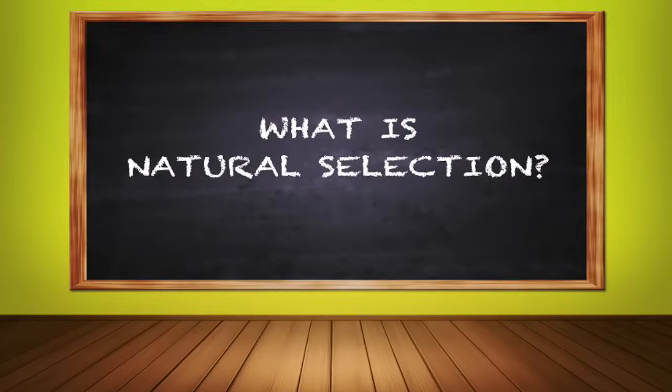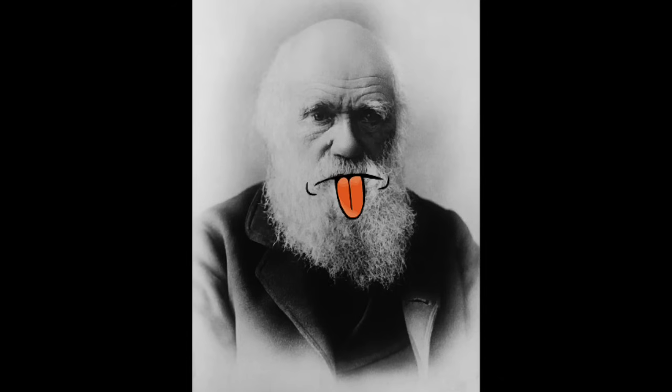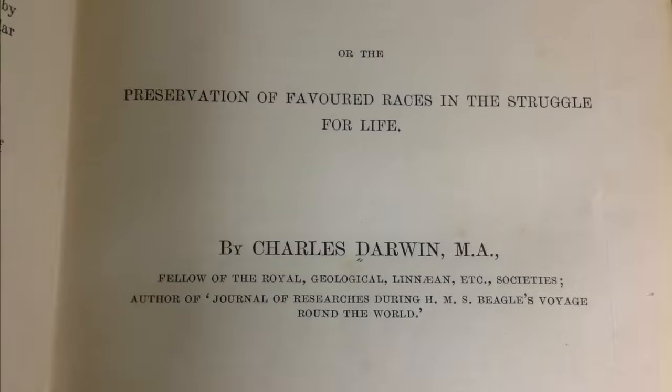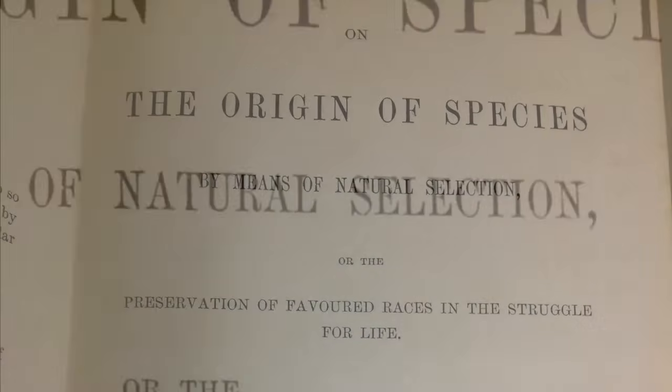The theory of evolution was developed by Charles Darwin and published in his book On the Origin of Species. He explained that natural selection is the process behind evolution. Charles Darwin developed his theories after his adventures upon the HMS Beagle.